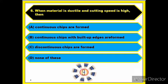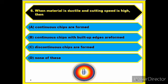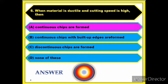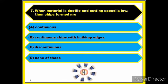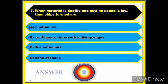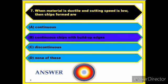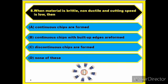Question number six: when material is ductile and cutting speed is high, answer: continuous chips are formed. Question number seven: when material is ductile and cutting speed is low, answer: continuous chips with built-up edge are formed. Question number eight: when material is brittle and cutting speed is low, answer: discontinuous chips are formed.